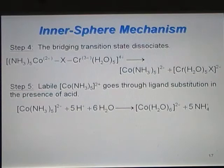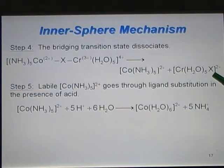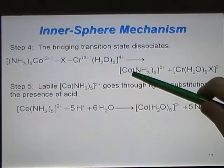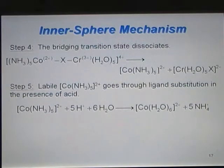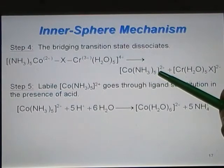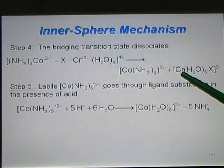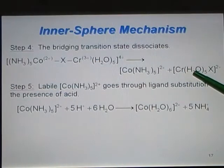Step 4, the bridging transition state must break apart, forming two new complexes. This is one of our products. By changing the oxidation state on Co from Co 3+ to Co 2+, this becomes a labile complex. By changing the oxidation state of Cr from 2+ to 3+, it now becomes an inert complex.